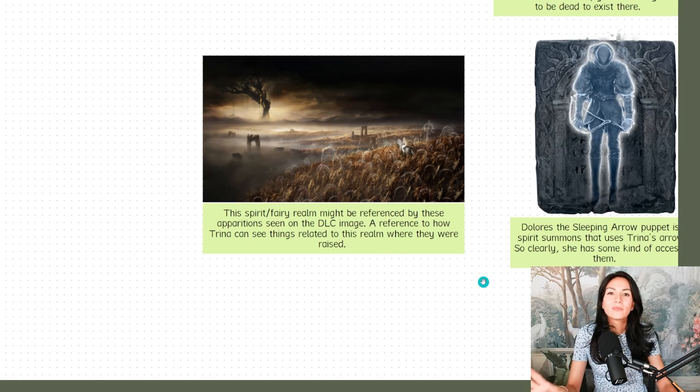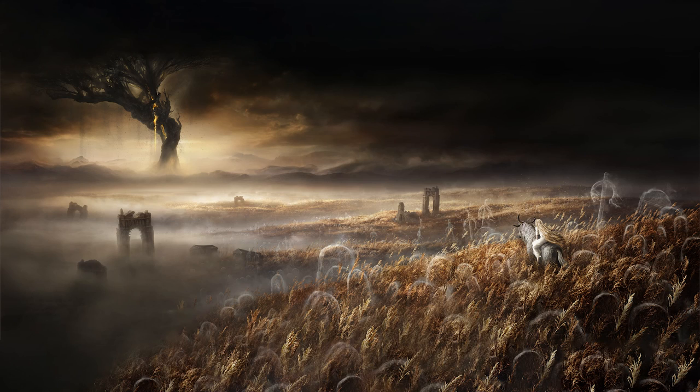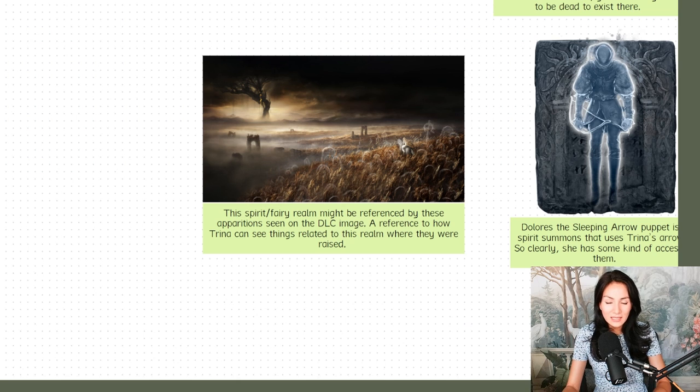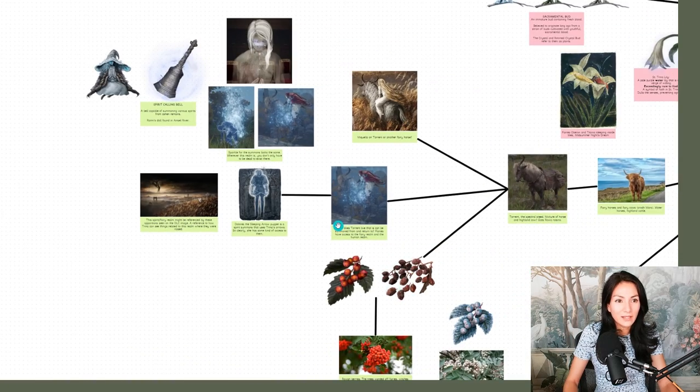This is kind of proof to me that wherever this realm is, you don't necessarily have to be dead to access it. Because Torrent lives in this same realm. I think Saint Trina, who was not dead, is also in that same realm. And that's how Dolores was able to use their arrows. This might explain the DLC image in which you can see all of these spectral gravestones. Trina can see both realms.